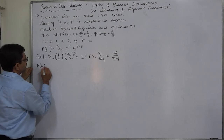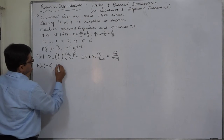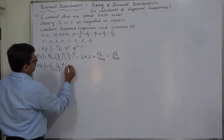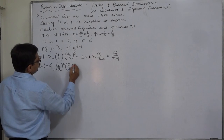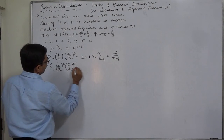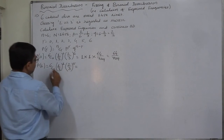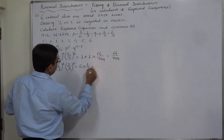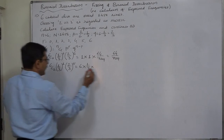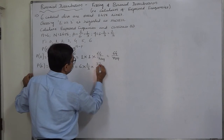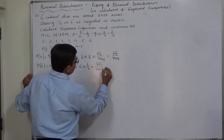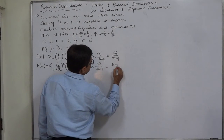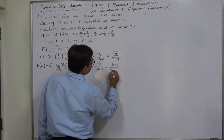P(1) equals 6C1 into (1/3)^1 into (2/3)^5. 6C1 is 6, (1/3)^1 is 1/3, and (2/3)^5 is 32 by 243. So 6 into 1 into 32 gives 192, and the denominator is 729. Therefore P(1) = 192 by 729.